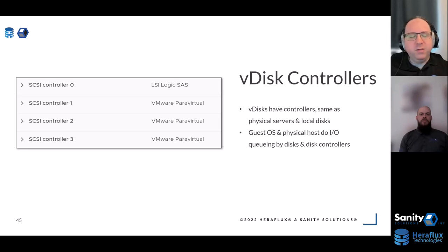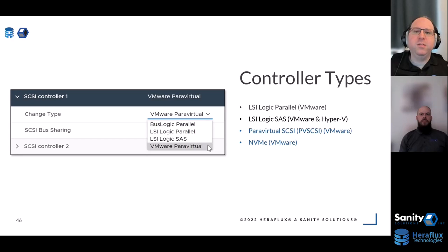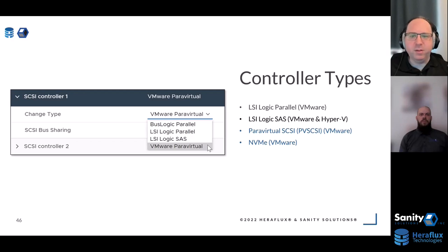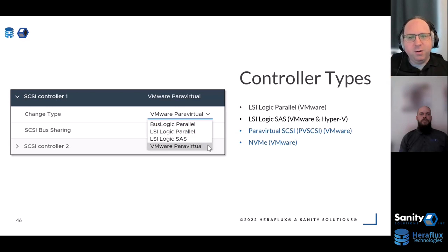On VMware you get LSI Logic Parallel, LSI Logic SAS, VMware Paravirtual SCSI, and NVMe. On Hyper-V it's just called a controller, but it's really the LSI Logic SAS controller built into the OS. The LSI Logic SAS controller for VMware and Hyper-V has a default non-changeable queue depth of just 32 concurrent storage operations. So if you don't touch a Cisco UCS environment and have one controller, you can push 32 concurrent storage commands — and the UCS blade profile is capped at 20. Instant bottleneck.